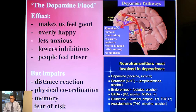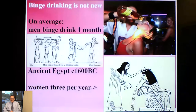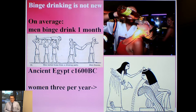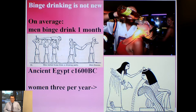Looking at youngsters today, binge drinking — where they drink to excess and pass out — may seem like a new phenomenon, but it's not new at all. Binge drinking is as old as history. It has been shown in ancient Egypt 3,500 years ago, where people went to a party, passed out, and were taken back to their rooms to sober up. Even on the side of some tombs, a lady has been shown at a party, having drunk too much and vomiting, before going back to drink some more. Statistics suggest that in the West, young men binge drink on average once a month.